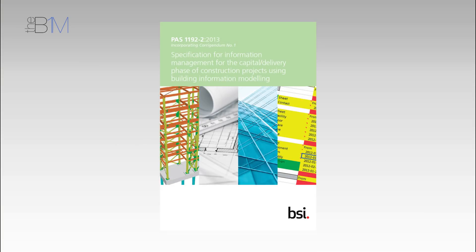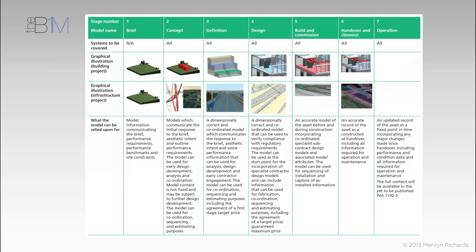The British Standard Guidance Document, PAS 1192 Part 2, details the typical requirements of each level of definition over a project's lifecycle. These align with the project work stages. It explains what the information model can be relied upon for at each stage.